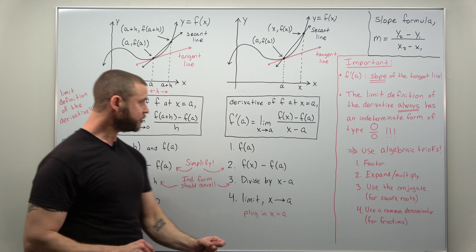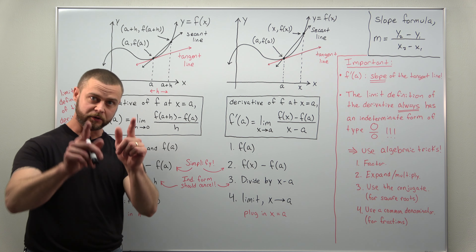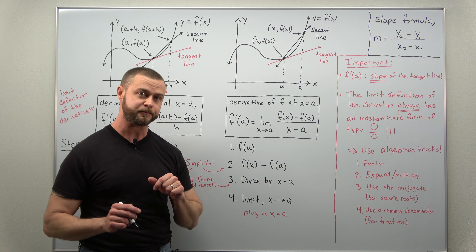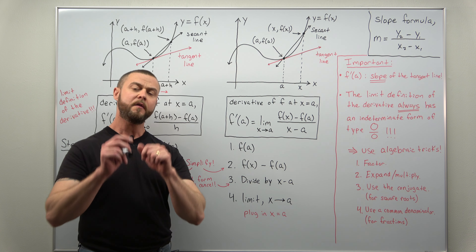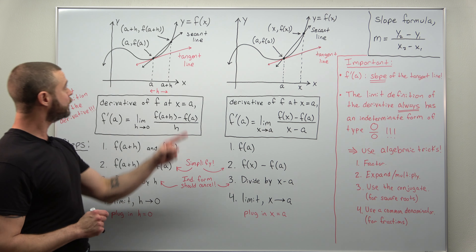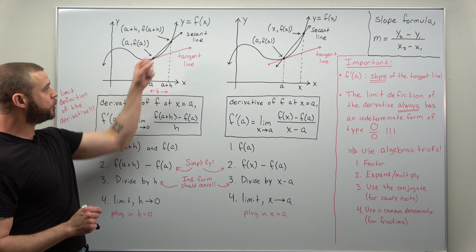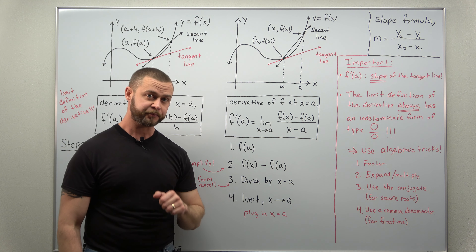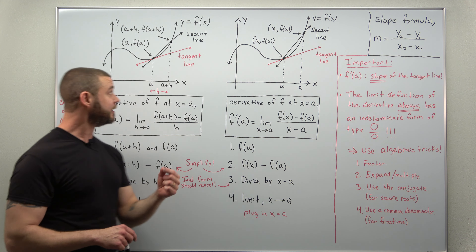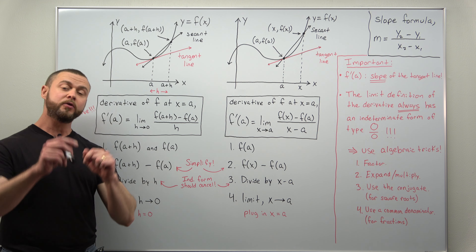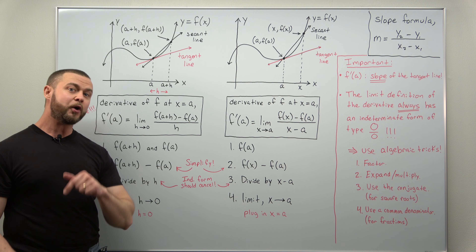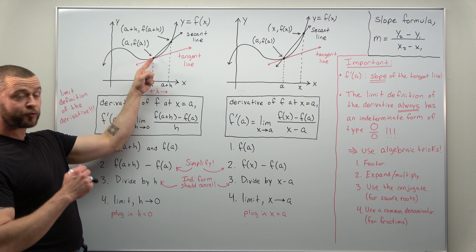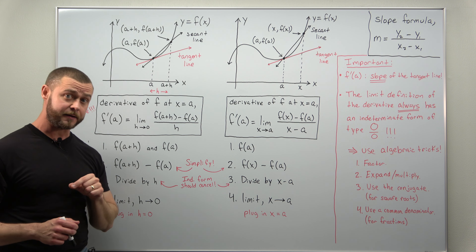There are actually two equivalent limit definitions of the derivative. They're very similar — they're only different in how the second point is described and labeled. We're thinking of a graph of a function and we're looking for the slope of the tangent line at a point on the graph, a comma f of a.